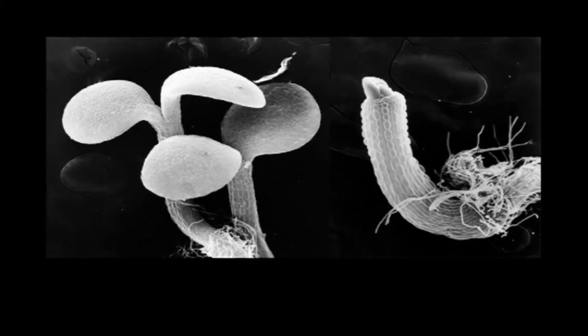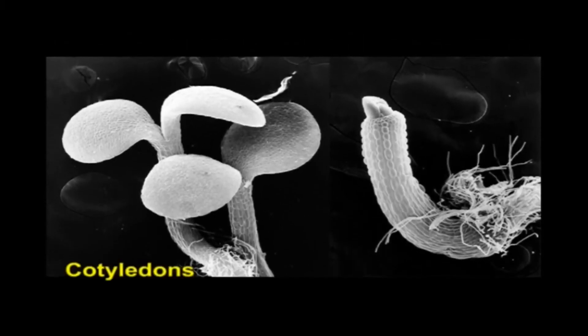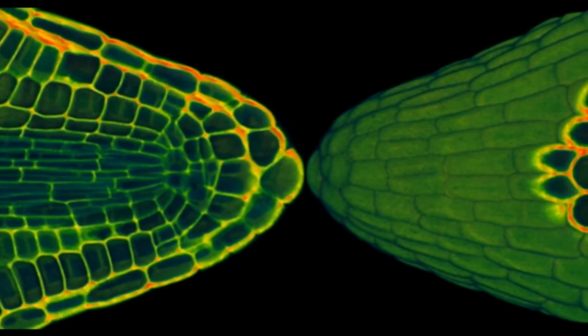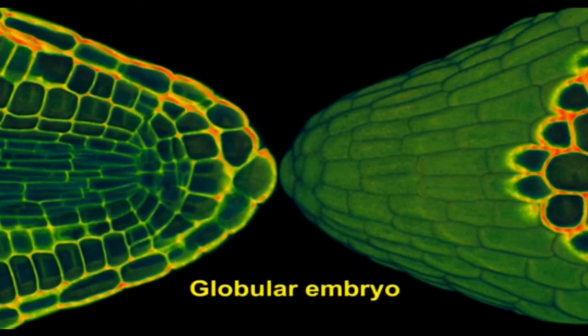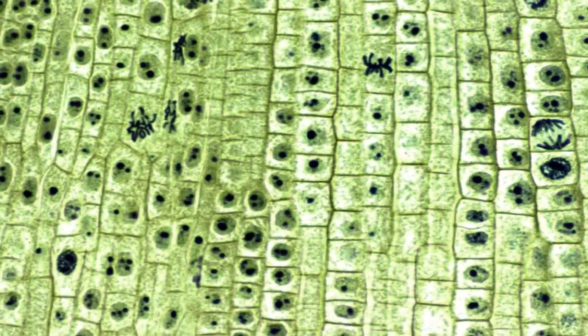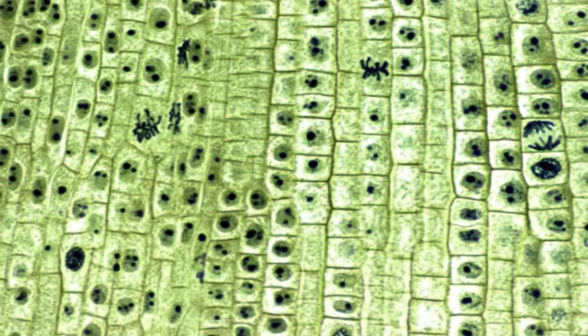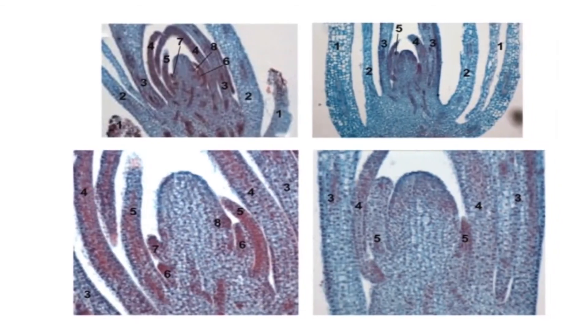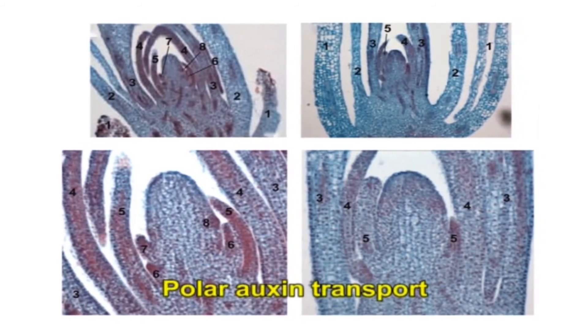The morphological changes are the first visible sign of the formation of the two embryonic organ systems during the transition from the globular stage to the heart stage. The two embryonic organ systems are the cotyledons and the axis. The cotyledons arise from a completely symmetrical globular embryo, showing that groups of cells in the apical region are made to proliferate at definite sites. These confined cell divisions are directed by polar auxin transport.